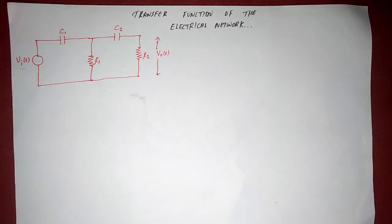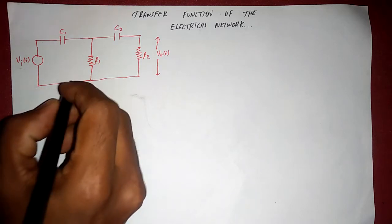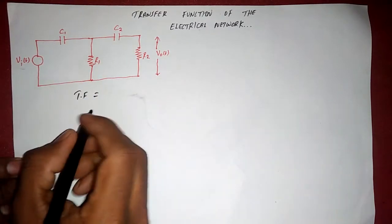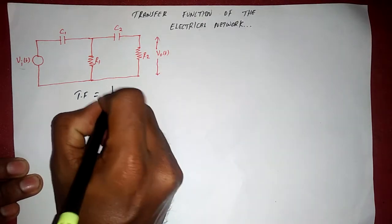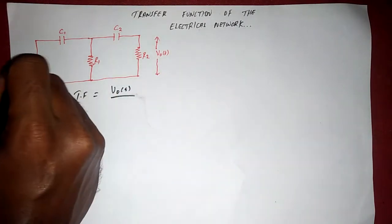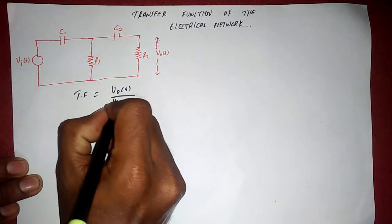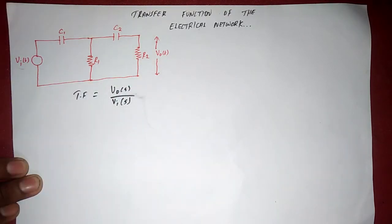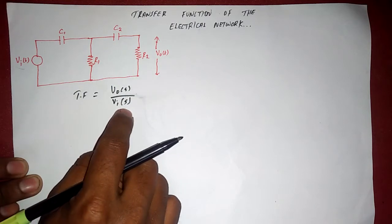Here we are going to write the output equation and the input equation, then find the transfer function, which is the Laplace transform of the output divided by the Laplace transform of the input: TF = V0(s) / Vi(s). We want to find V0(s) divided by Vi(s).